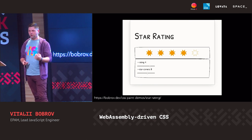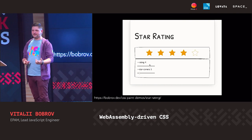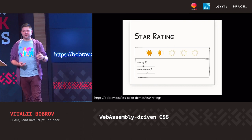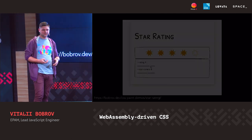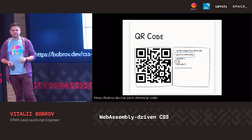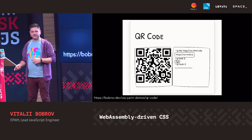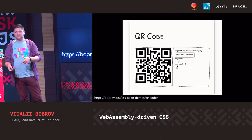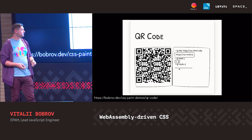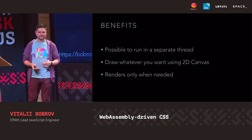Pretty interesting. The most nice feature is that it's quite reusable — we can declare a JavaScript module that will load Painter, and then we're allowed to use this custom function in any project we want. Another quite interesting and more useful example is QR code generation. We're passing a string and a few parameters to the Paint Worklet through custom properties, and we're generating a real QR code. You can check it — it should link to the CSS.js website.